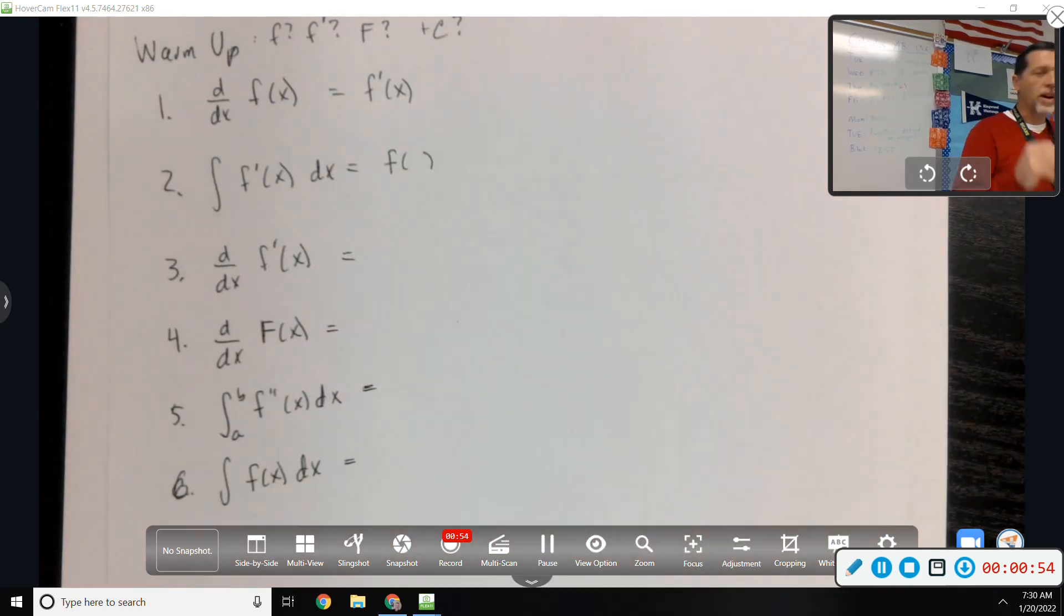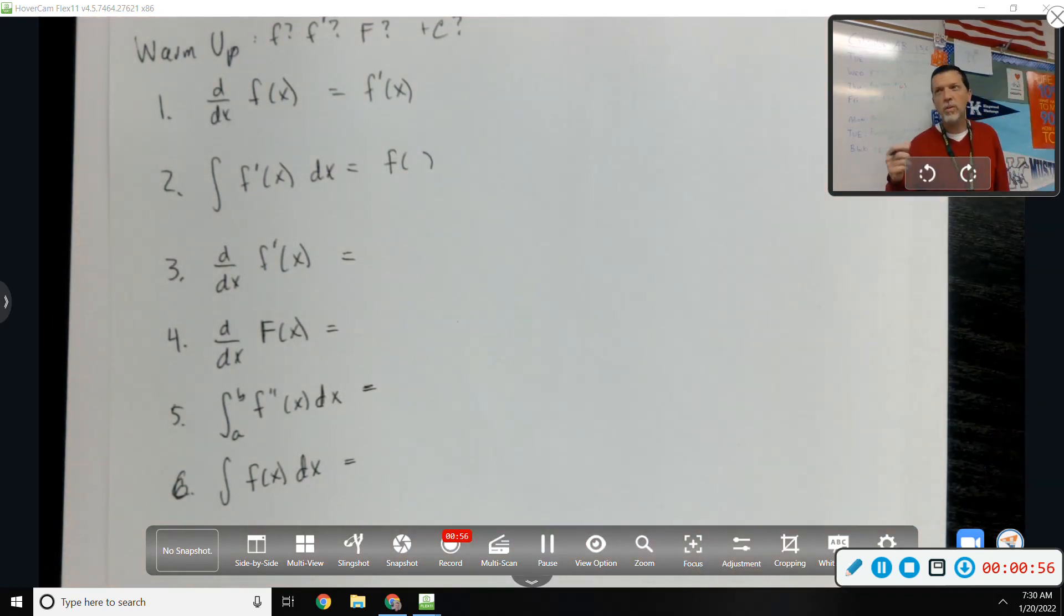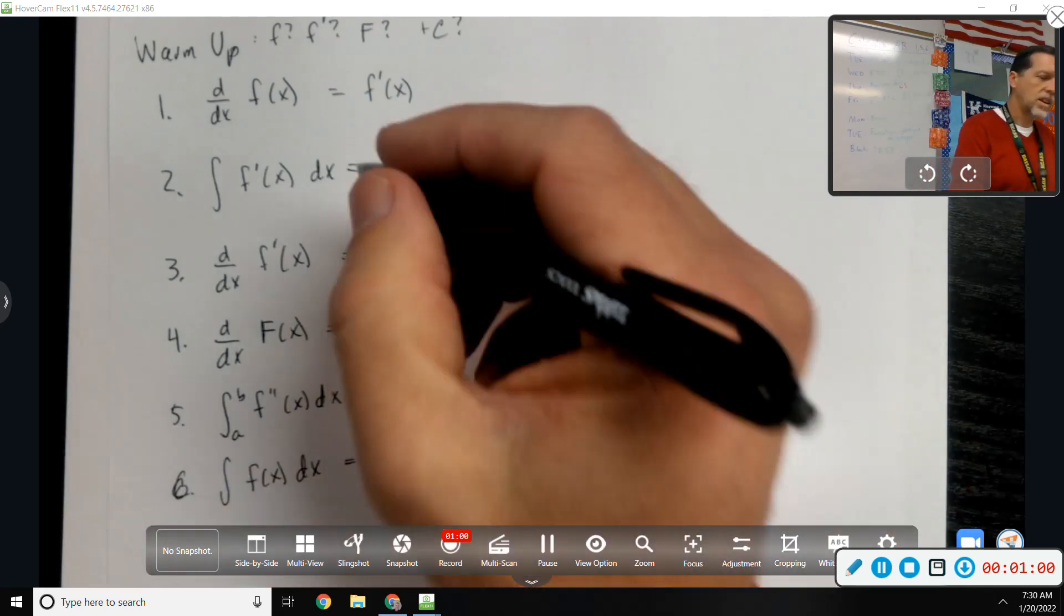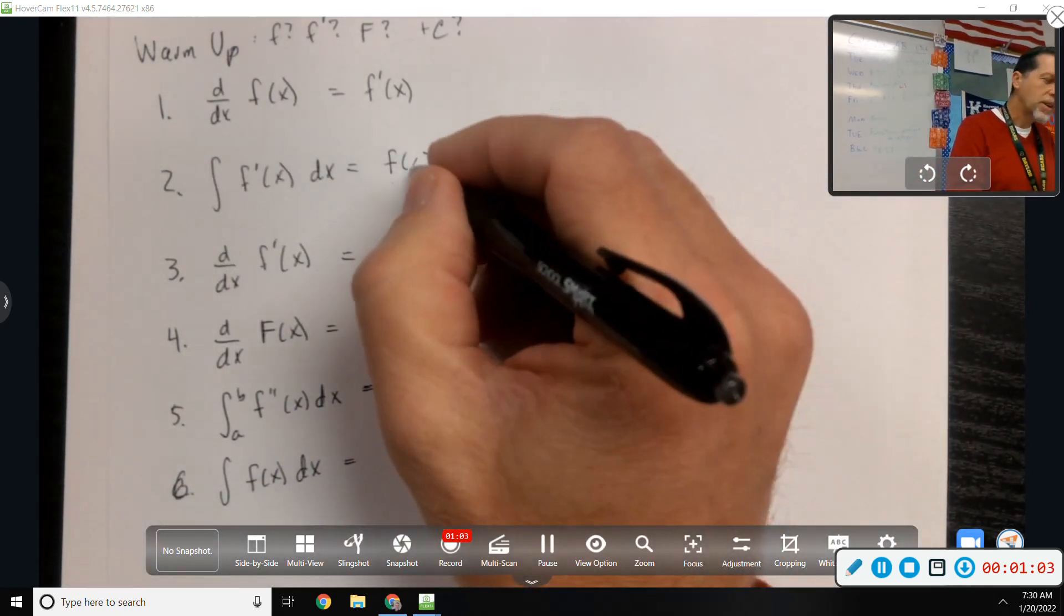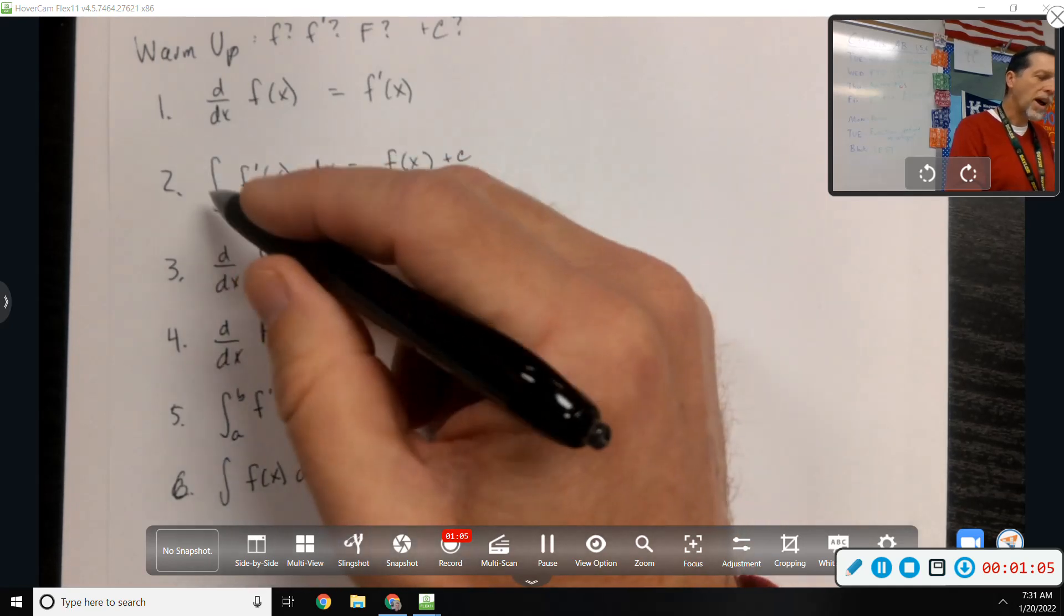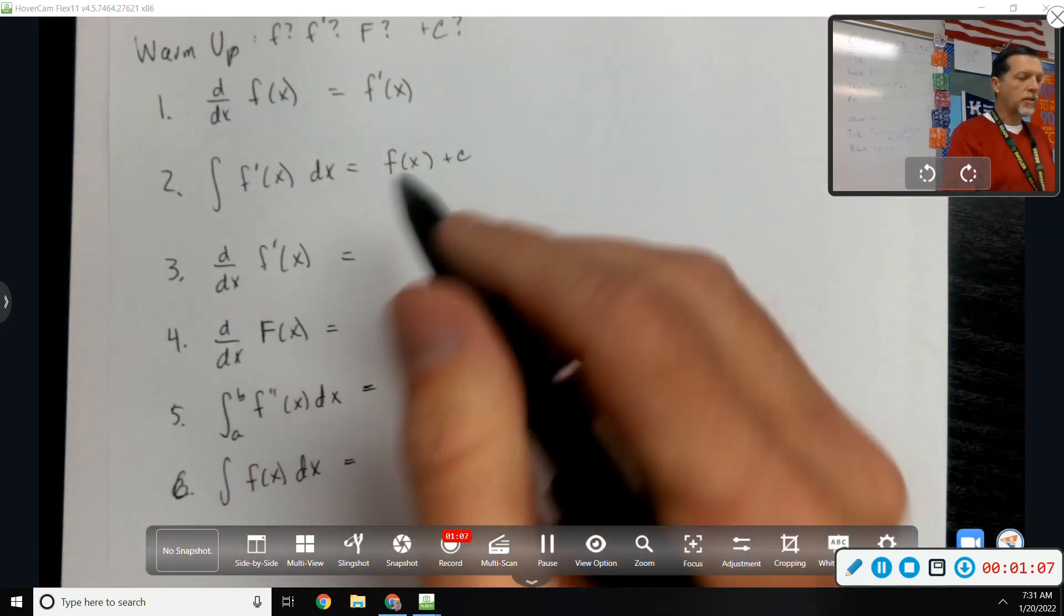Now, is this the one where I do with limits or is this the one where I do plus c? Plus c. Why plus c? Because there's no bounds. There's no bounds to use, so plus c. If there were bounds, then it would be f of b minus f of a.